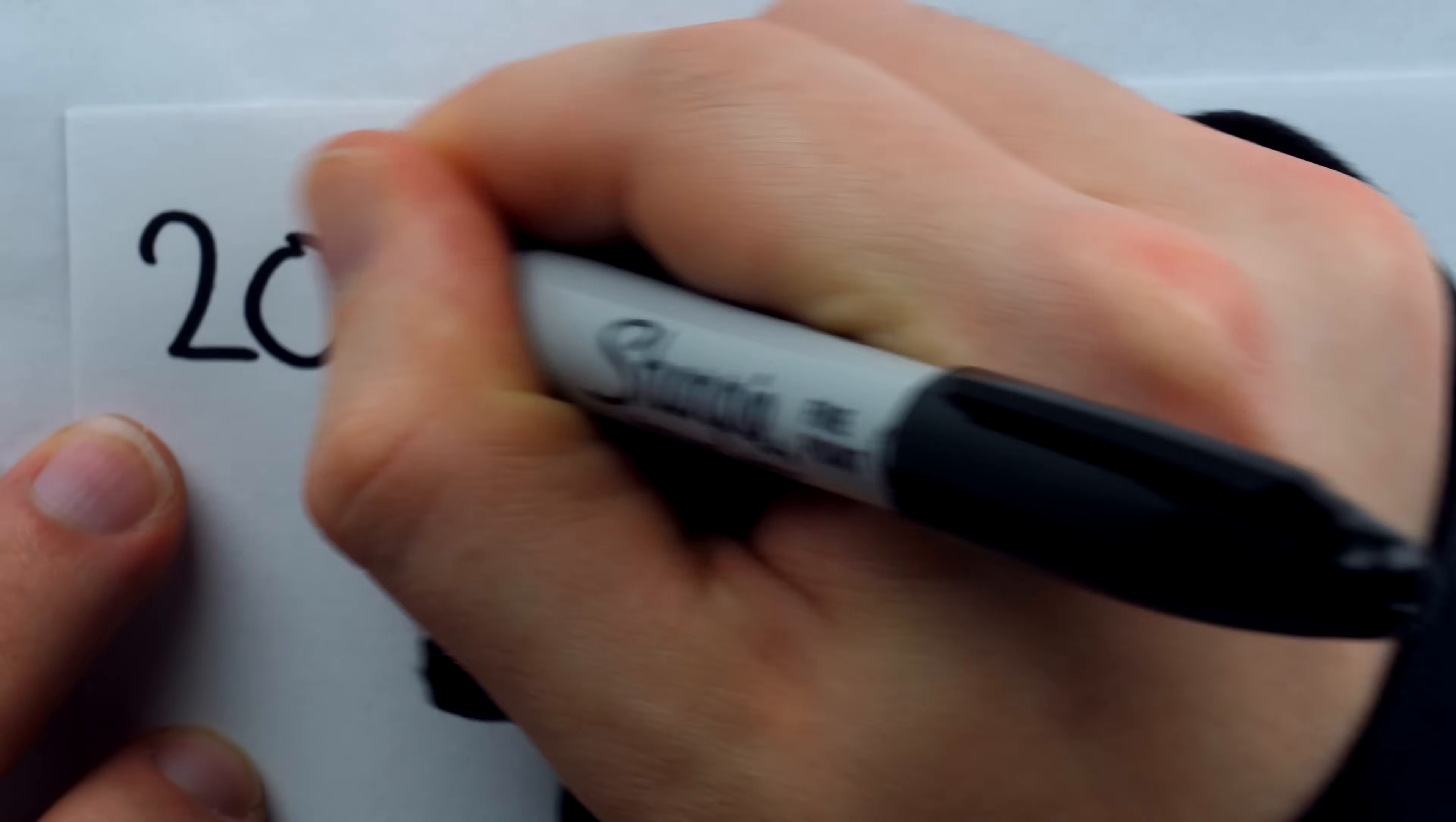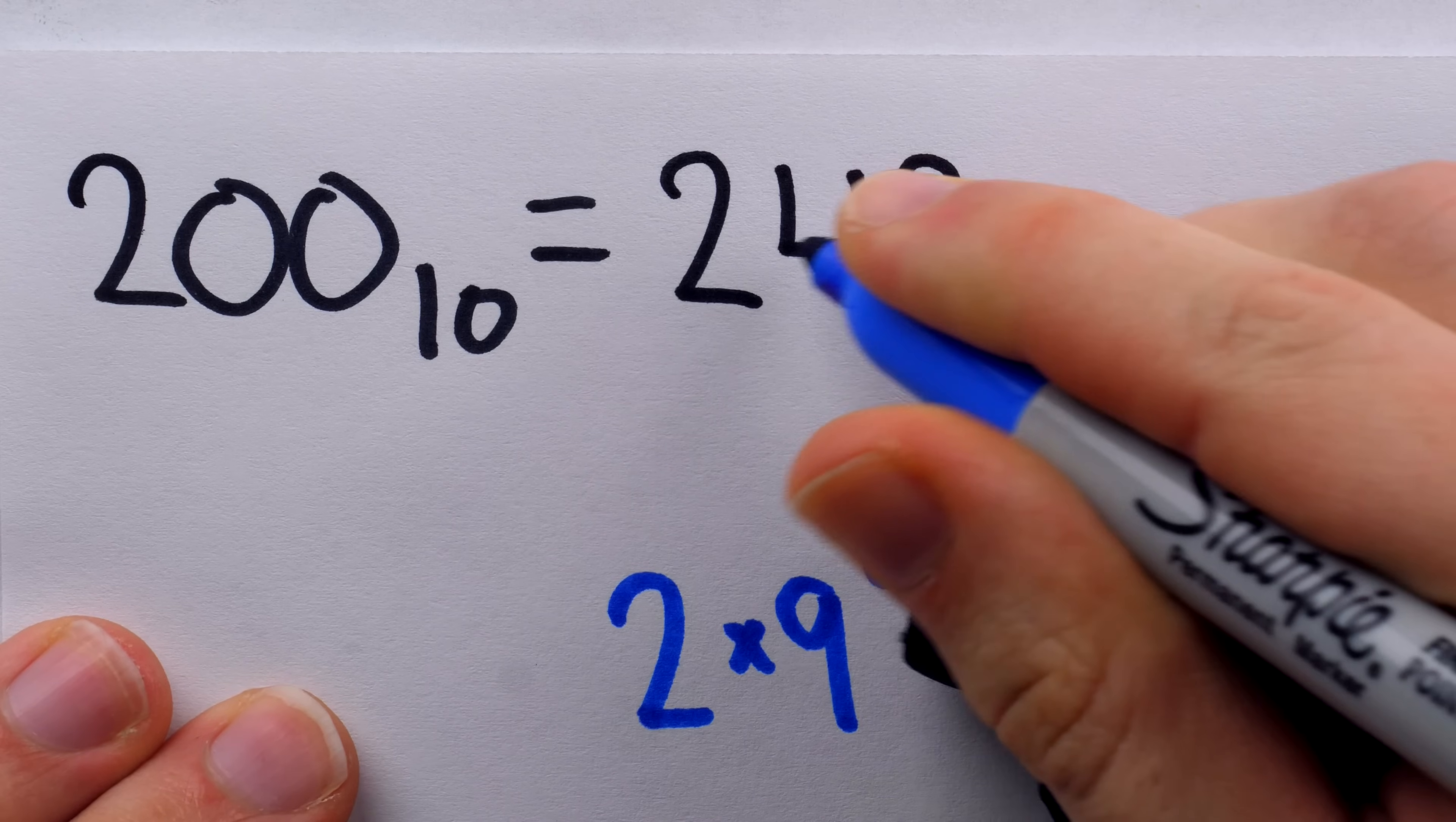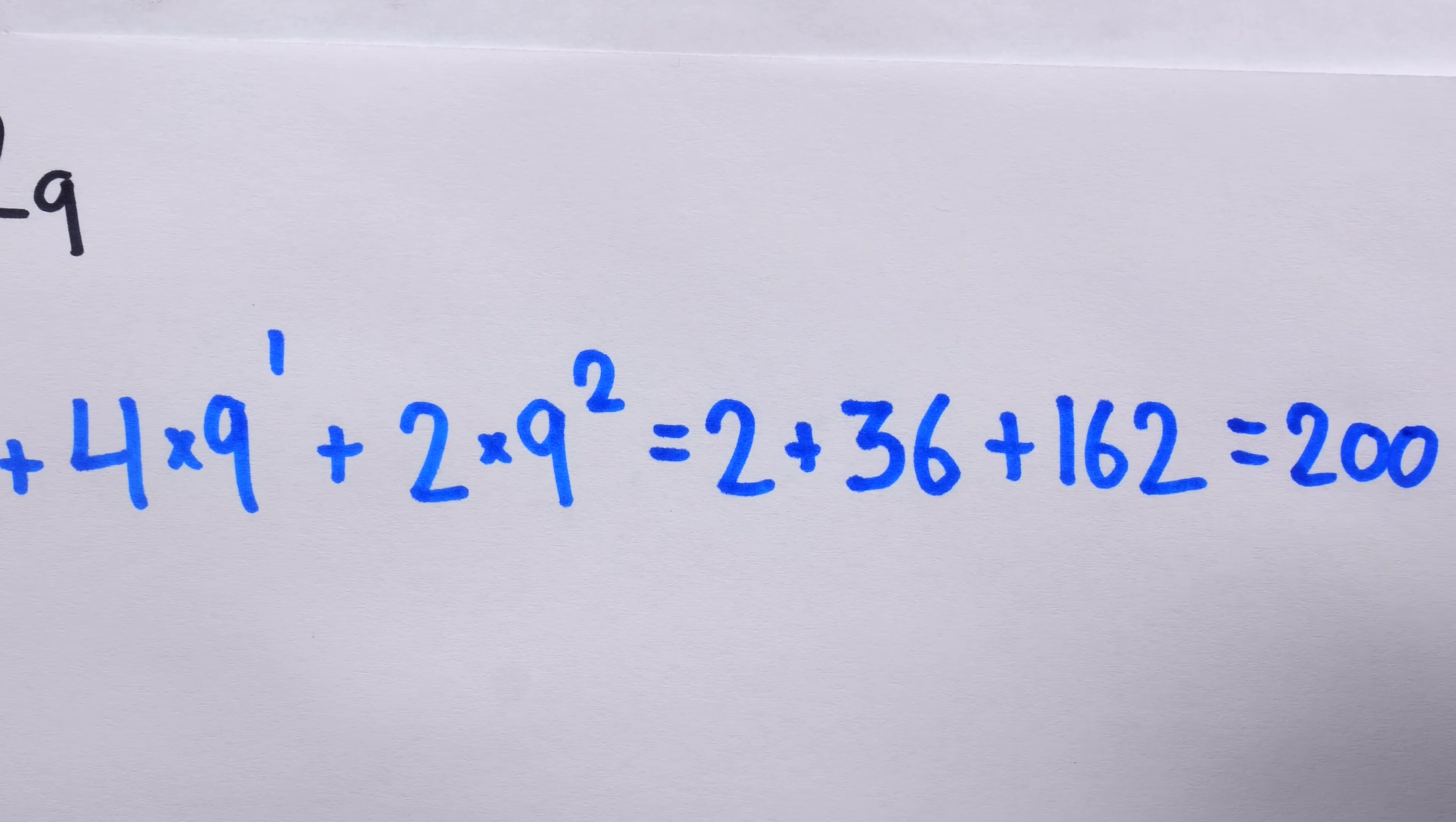200 is also a palindrome if we write it in base 9. In base 9, 200 appears as 2, 4, 2. This 2 represents 2 copies of 1, or 2 copies of 9 to the 0. This 4 is 4 copies of 9, and this 2 is 2 copies of 9 squared. Together, that's 2 plus 36 plus 162. And all of this adds to 200.